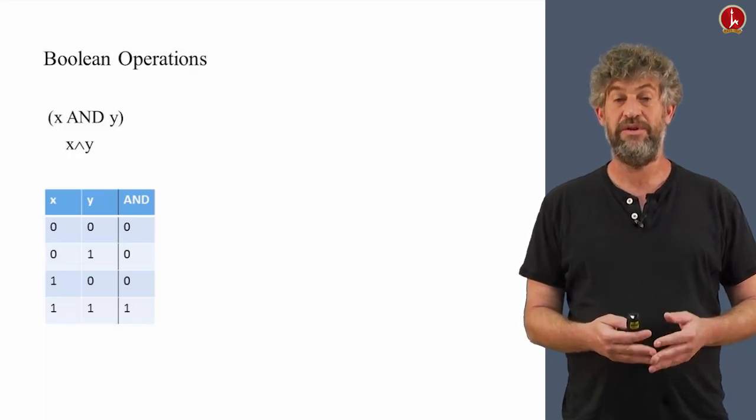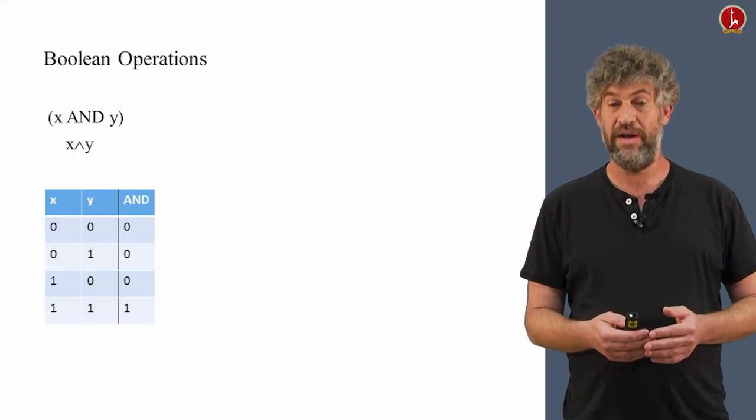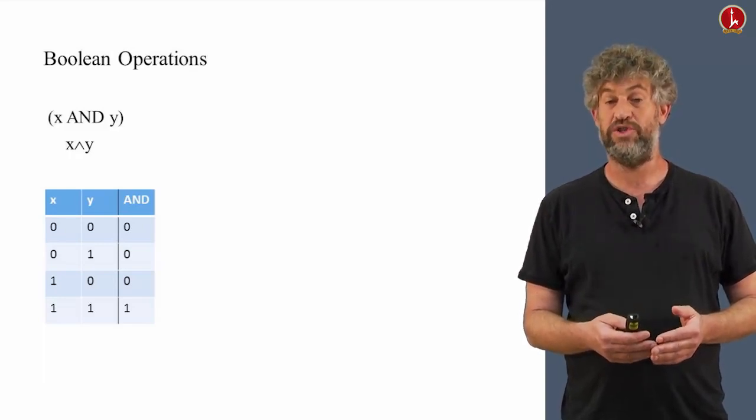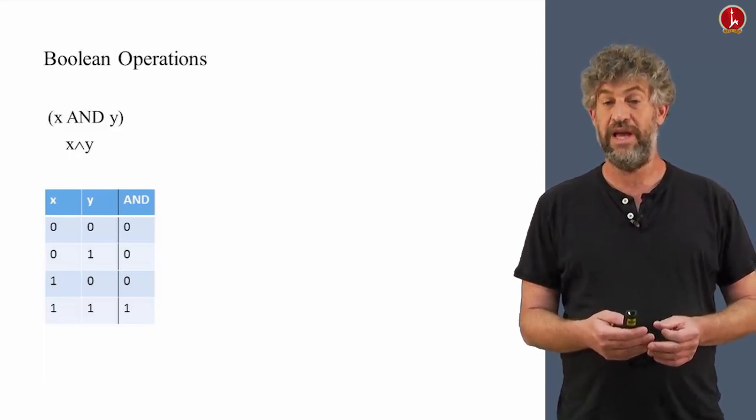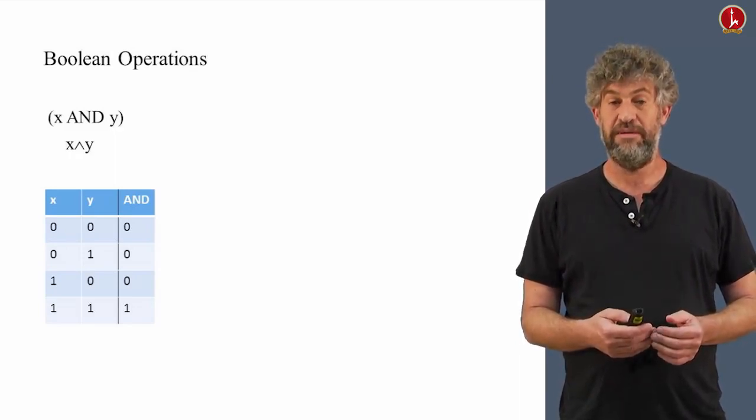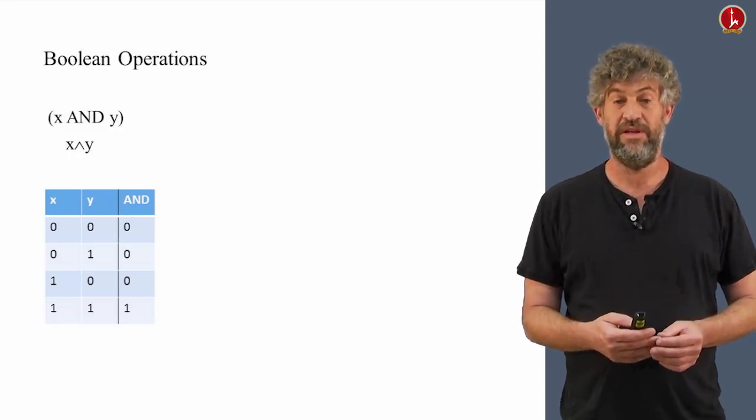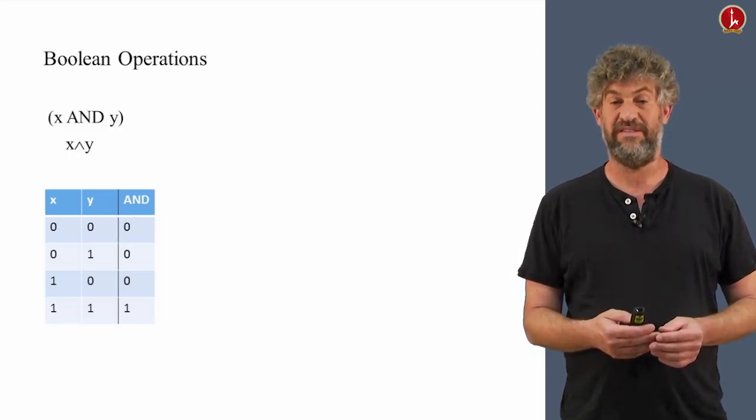We can actually see all the different possibilities for combining two values of zeros and ones into the result, which is the AND of them, in a little table that is called the truth table, because it actually gives all the different possibilities of the inputs x and y. And for each one of these possibilities, it lists what is the output, what is x AND y.